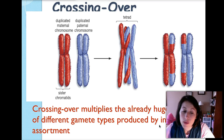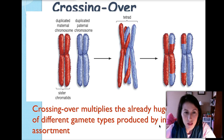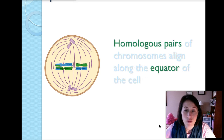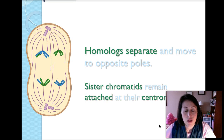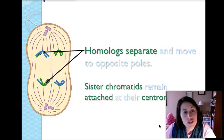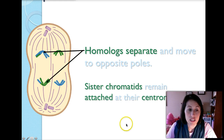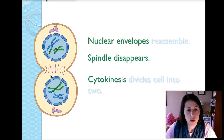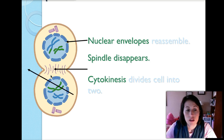Crossing over multiplies the already huge number of different gamete types produced by independent assortment. In metaphase one the homologous chromosomes line up in the center of the cell. In anaphase one the homologous chromosomes separate and move to opposite poles of the cell — the sister chromatids remain attached at their centromeres, but where they crossed over they now have slightly different genetic information. In telophase one the nuclear envelope reassembles, spindle fibers disappear, and cytokinesis divides the cell into two.